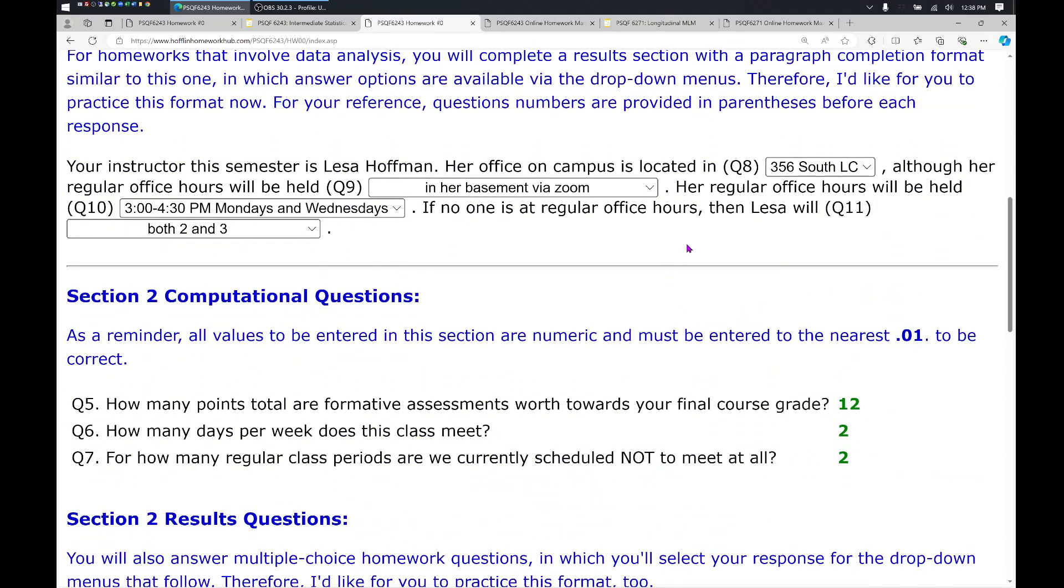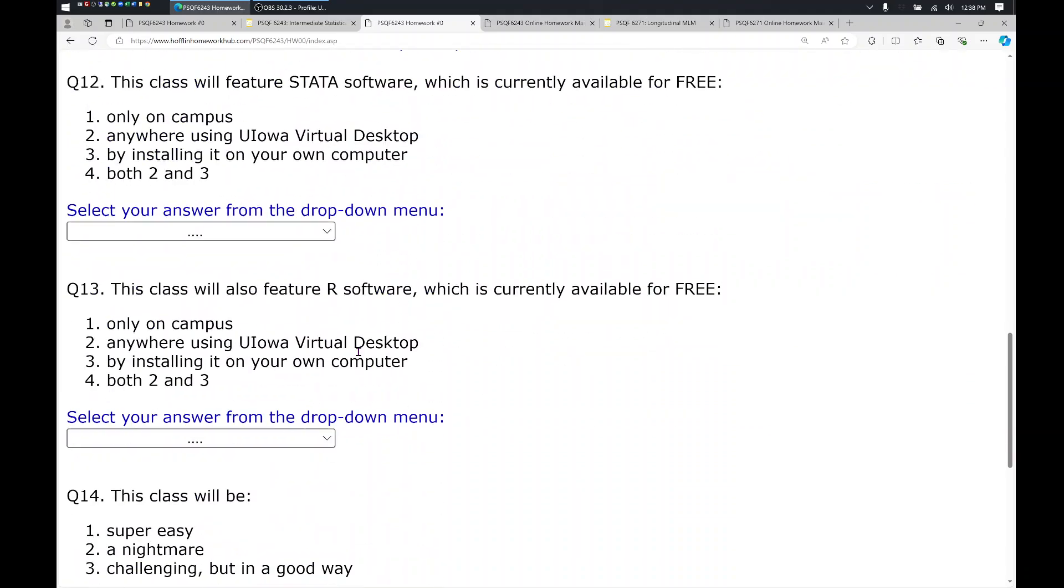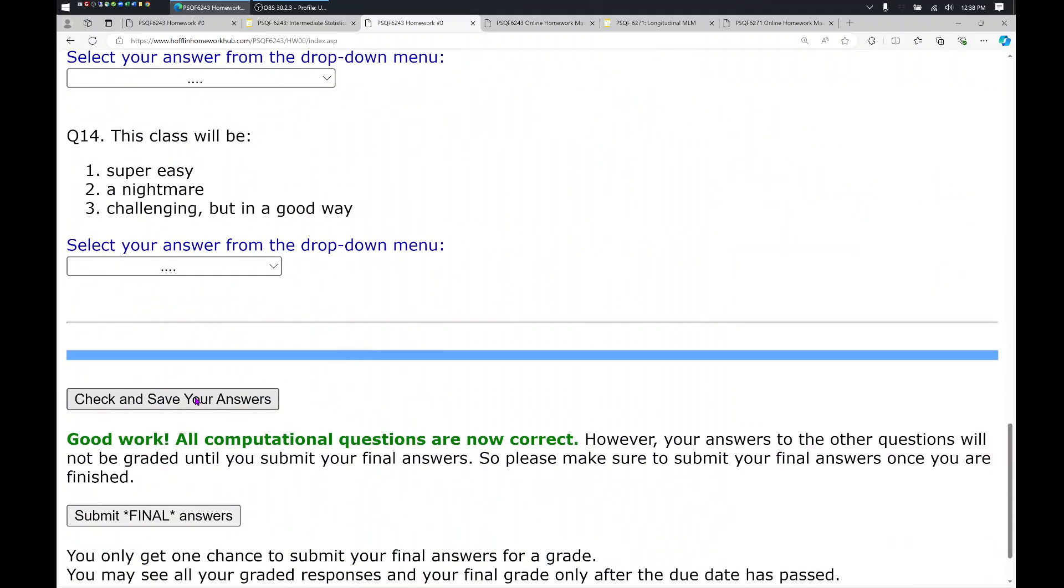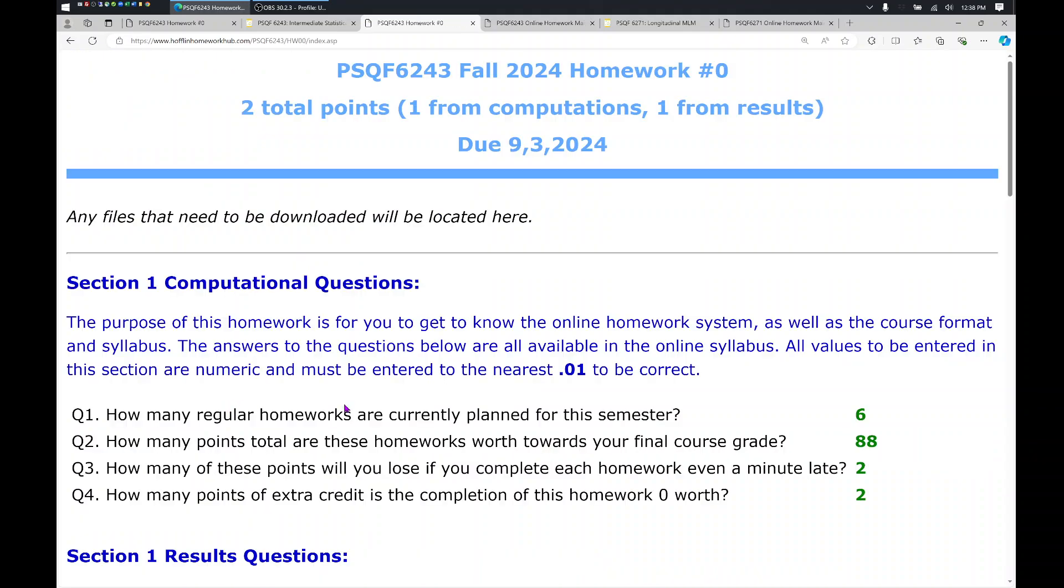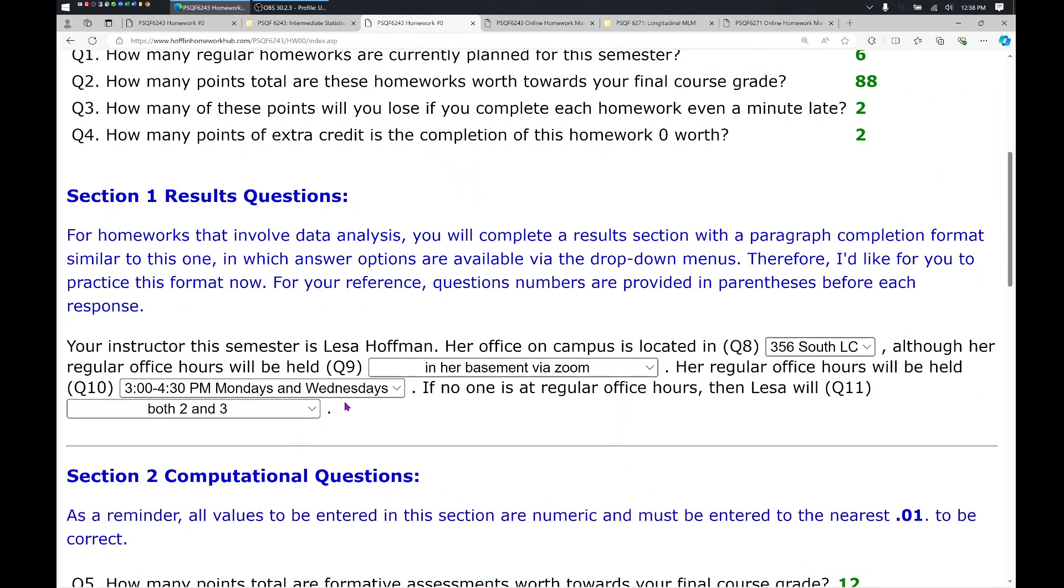So you'll note that none of these results section answers have turned colors. That's because they are not checked instantaneously. To make sure that they are saved, though, there is a button at the bottom of the screen called Check and Save Your Answers that you should click. So once you click this button, if you exit out of this webpage, either on purpose or accidentally, your work will be stored by the system. So you can log off, come back to finish your assignment as many times as you need, and you will not lose your place.